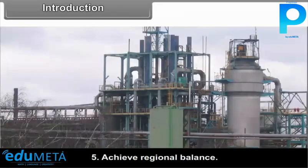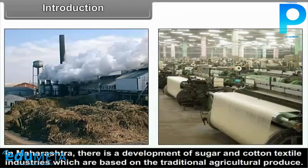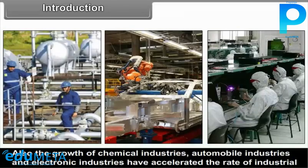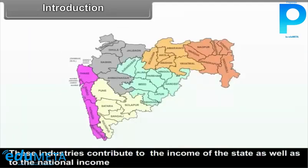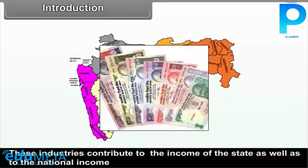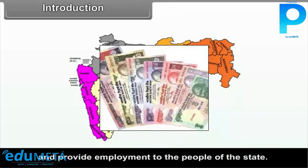In Maharashtra, there is a development of sugar and cotton textile industries which are based on traditional agricultural produce. Also, the growth of chemical industries, automobile industries and electronic industries have accelerated the rate of industrial development. These industries contribute to the income of the state as well as to the national income and provide employment to the people of the state.